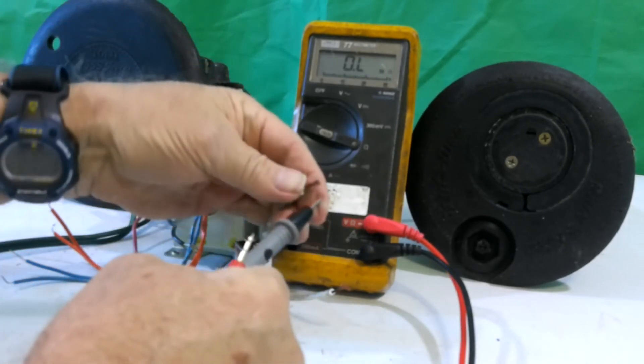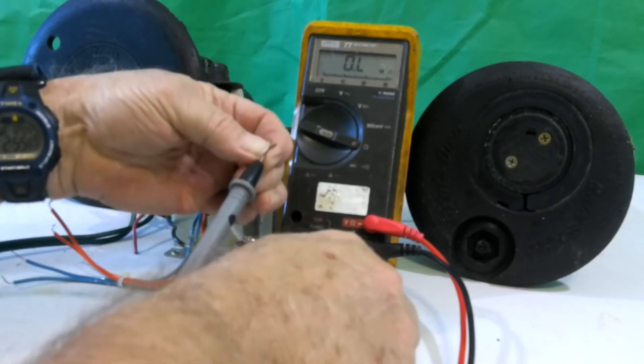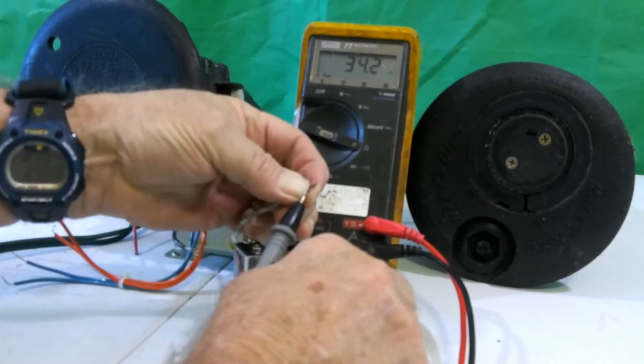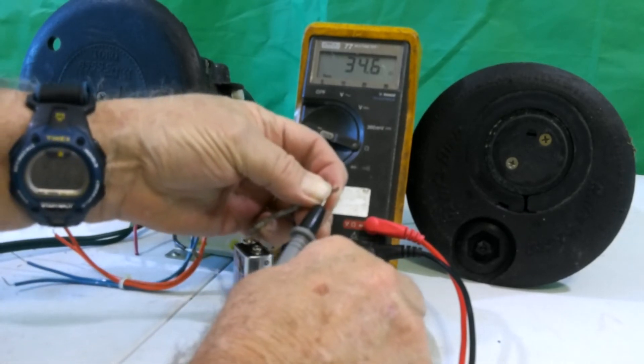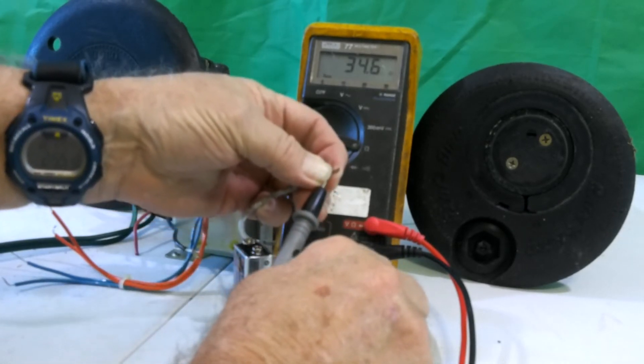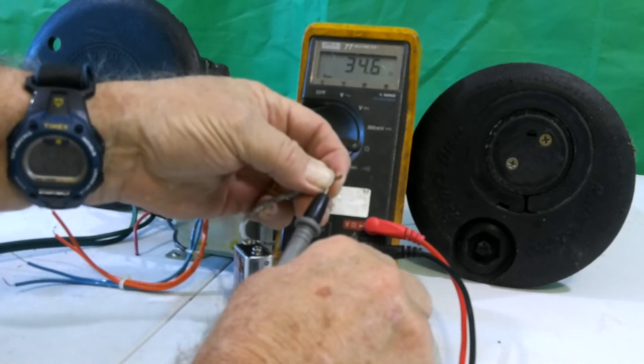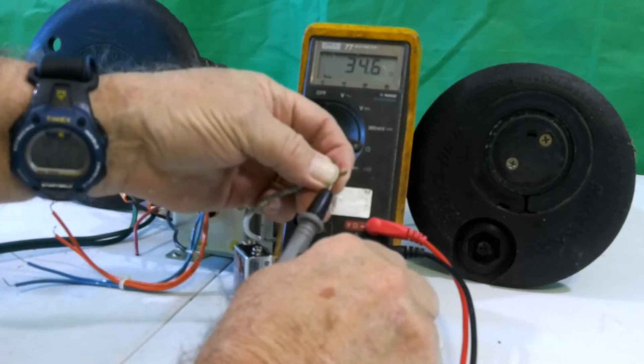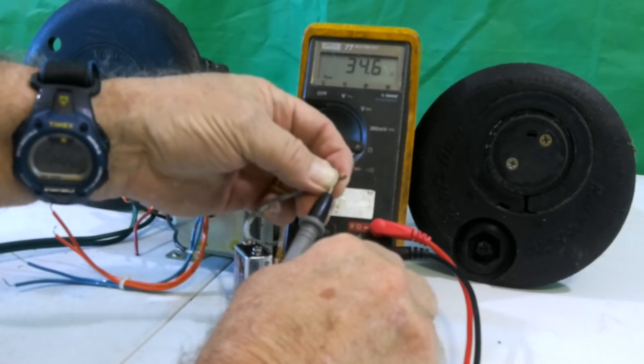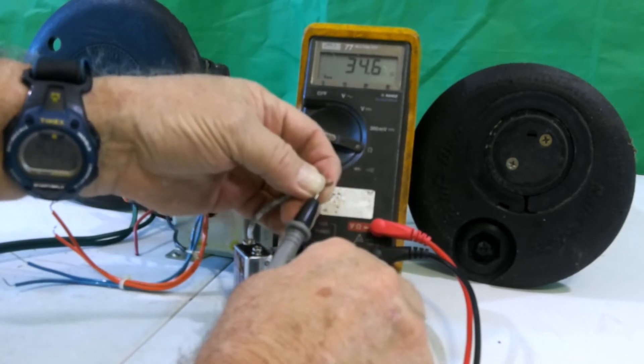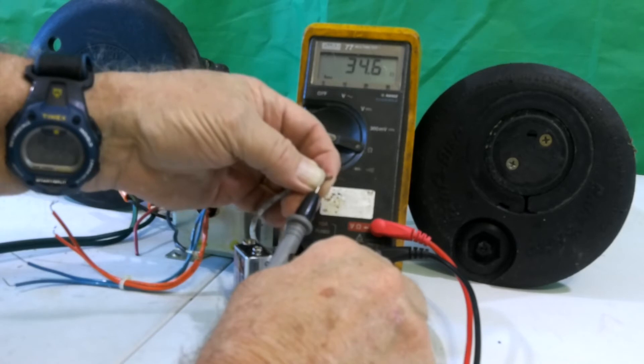Now I'm going to hook up to the Rainbird solenoid. And that's showing me a resistance reading of 34.6, which is a correct reading for that particular solenoid. So again, you need to know what solenoid is, what manufacturer, so you know what that resistance reading should be.